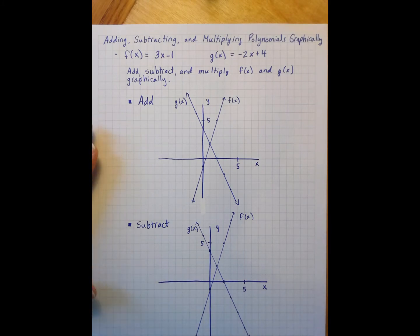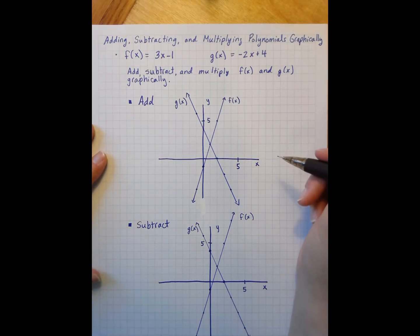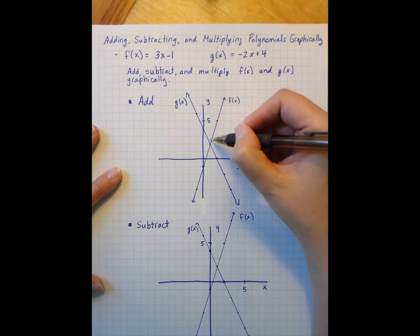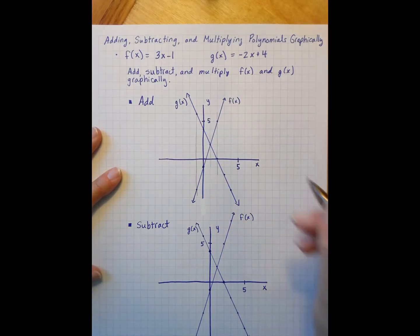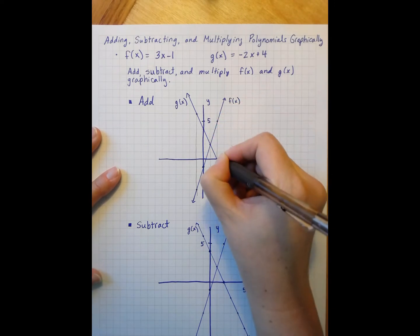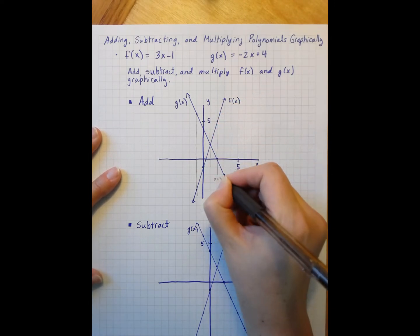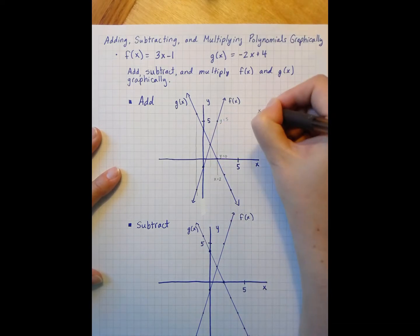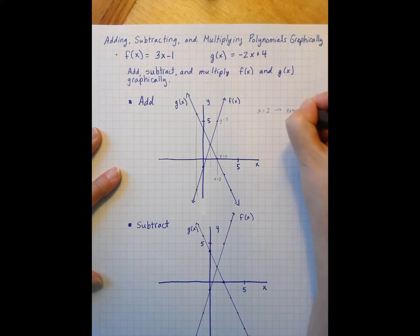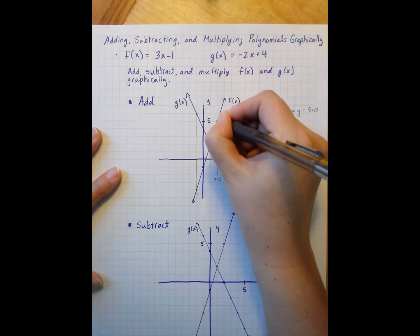So when we're adding the functions, what we're in a lot of ways adding are the y's. So I'm going to look at several x values and add the corresponding y's. Here at this x value of 2, when x equals 2, I have a y of 5 and a y of 0. So when we have x equals 2, my new y would equal 5 plus 0, which is 5. So my new y is going to have a dot right there.